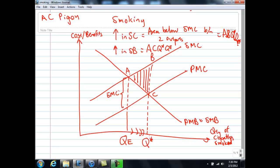So in this case, what you must know is that for the right tax to be set, the tax must be equal to EMC at the optimum output QE.